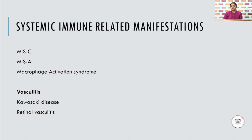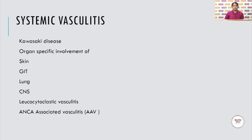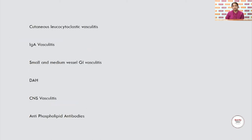Systemic immune-related manifestations can also present as multi-system inflammatory syndromes in both children and adults, or as macrophage activation syndrome. The vasculitis seen can be Kawasaki's disease, retinal vasculitis, or organ-specific involvement of areas like skin, GIT, lung, CNS, leukocytoclastic vasculitis, or ANCA-associated vasculitis. Specifically, cutaneous leukocytoclastic vasculitis, IgA vasculitis, small and medium vessel GI vasculitis, diffuse alveolar hemorrhages, CNS vasculitis, and antiphospholipid antibodies are reported.